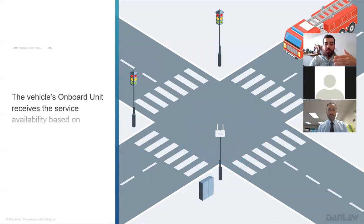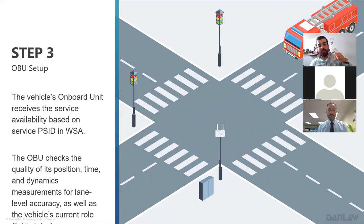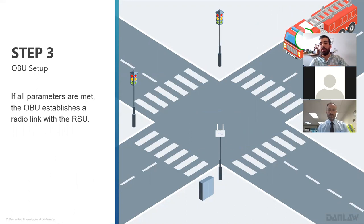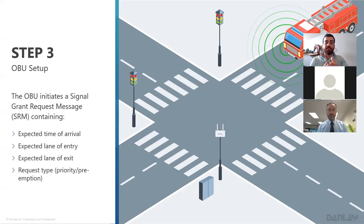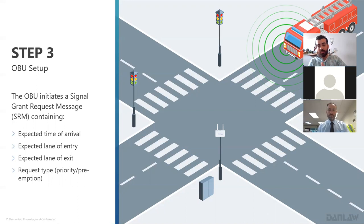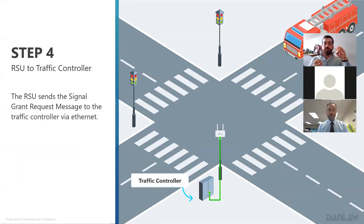Once the RSU sends the WSA and MAP message, the OBU hears the WSA and goes through a checklist: Are the triggers on — such as the light bar, siren, or both? Does the OBU meet all the parameters? If so, it sends an SRM (Signal Request Message) to the RSU. The SRM includes the expected time of arrival, expected approach or lane of entry, expected lane of exit, and the type of request — whether preemption or priority. The RSU receives this message, translates it, and sends it to the traffic controller via SNMP.